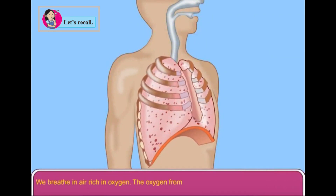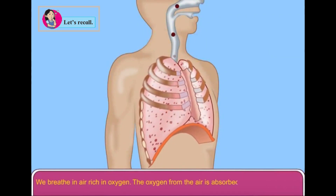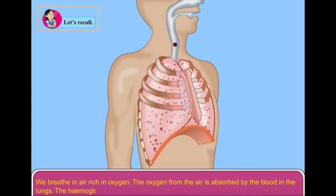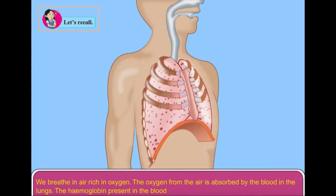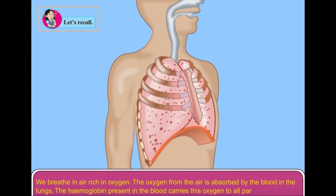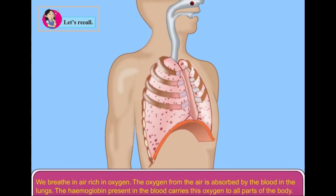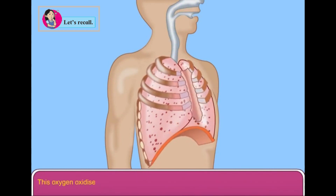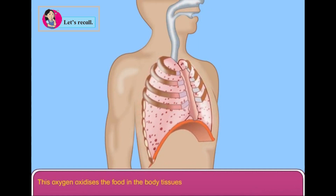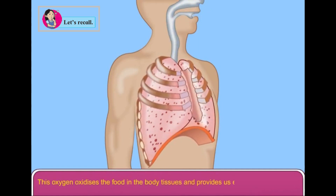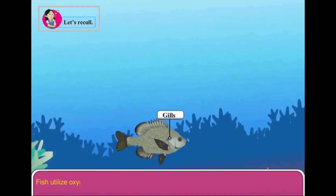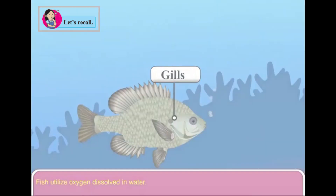The oxygen from the air is absorbed by the blood in the lungs. The haemoglobin present in the blood carries this oxygen to all parts of the body. This oxygen oxidizes the food in the body tissues and provides us energy. Fish utilize oxygen dissolved in water.